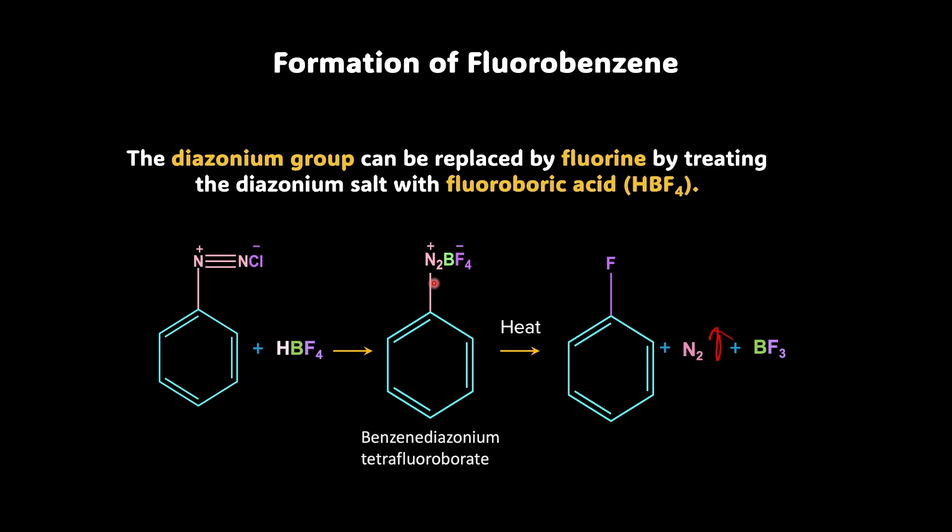So this is also a replacement which is happening and a substitution reaction which is taking place and this is how we prepare fluorobenzene. Again, the name of the reaction is not Sandmeyer reaction but we shall call it Balz-Schiemann reaction. So there we go. We now know the preparation of aryl halide no matter we are talking about fluorobenzene, chlorobenzene, bromobenzene or iodobenzene.